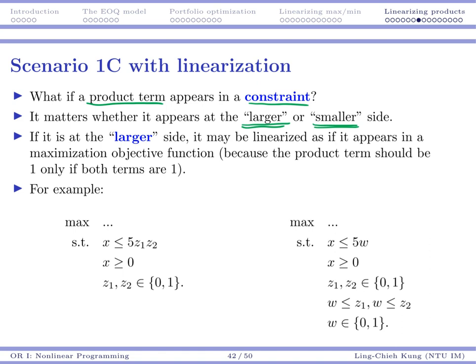So if that product term is at the larger side, for example something like this, then it may be linearized as if it appears in a maximum objective function. Why is that? Because in this case, pretty much, you are saying that this value, this w value should be lower bounded.